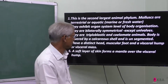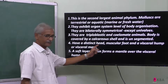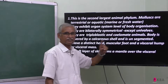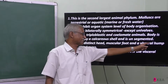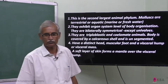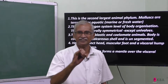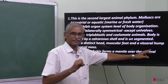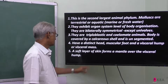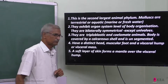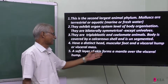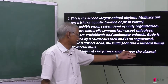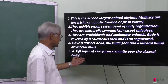There are distinct segments on the body. They have a distinct head, muscular foot, and visceral hump, also called visceral mass. A soft layer of skin forms a mantle over the visceral hump.